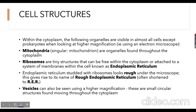Ribosomes are tiny structures that can be free within the cytoplasm or attached to a system of membranes in the cell known as the endoplasmic reticulum. When endoplasmic reticulum is studded with ribosomes it looks rough under the microscope, giving rise to the name rough endoplasmic reticulum, often shortened to RER. Vesicles are similar to vacuoles but smaller, and they are small circular structures found moving throughout the cytoplasm.